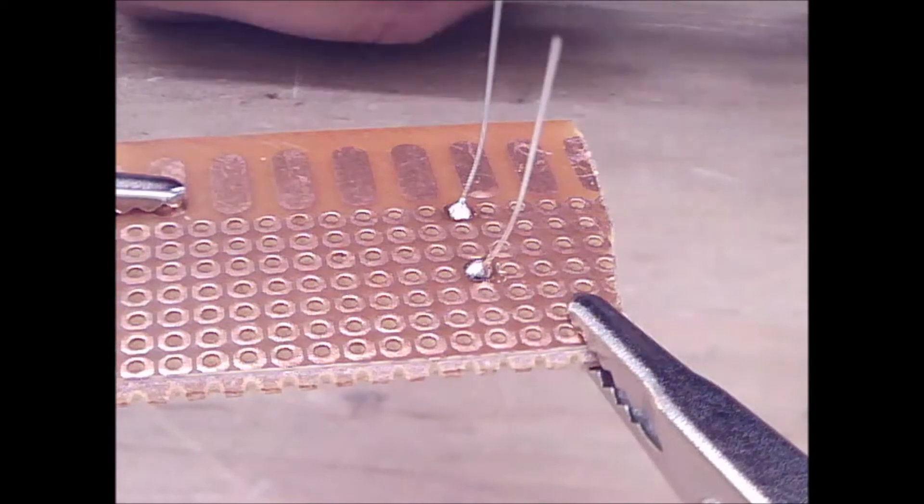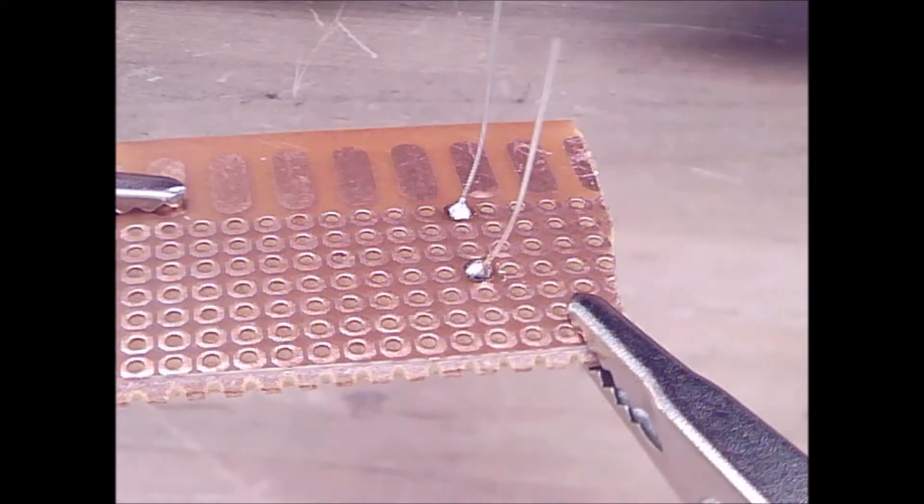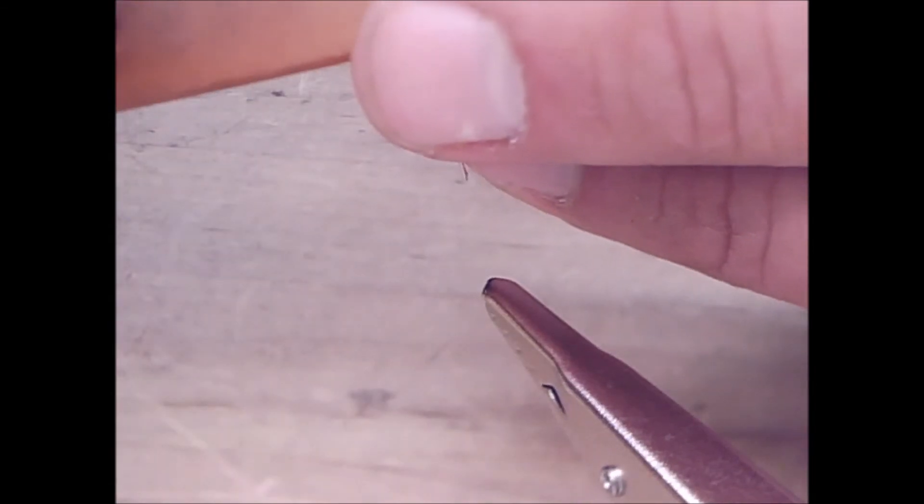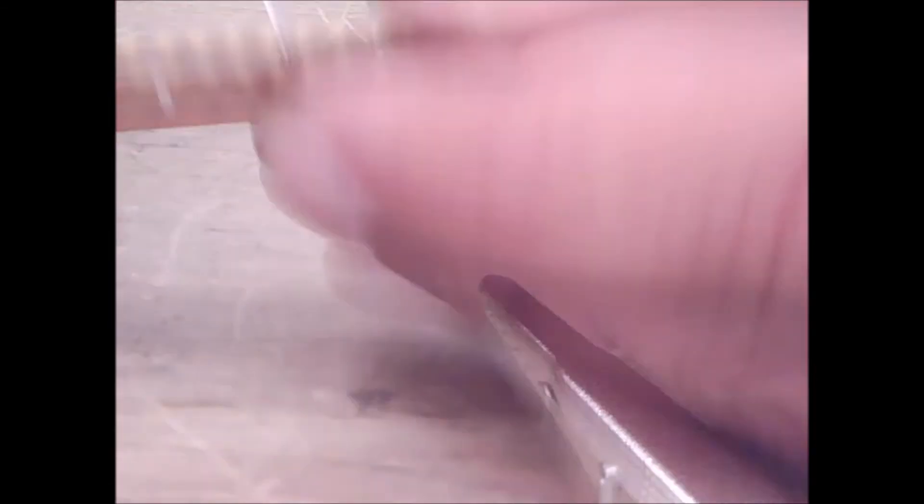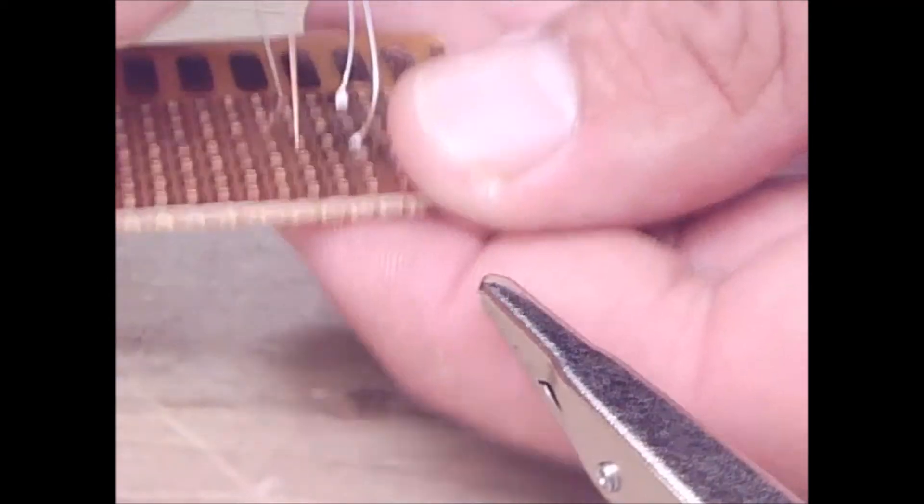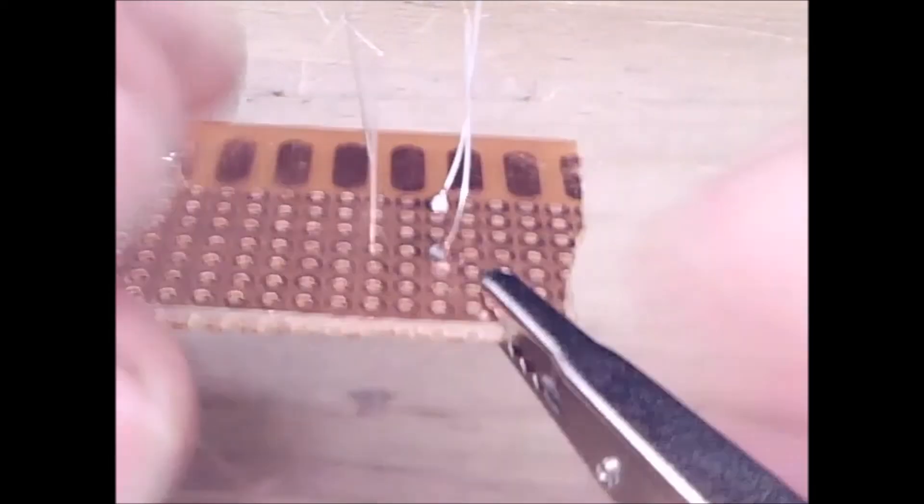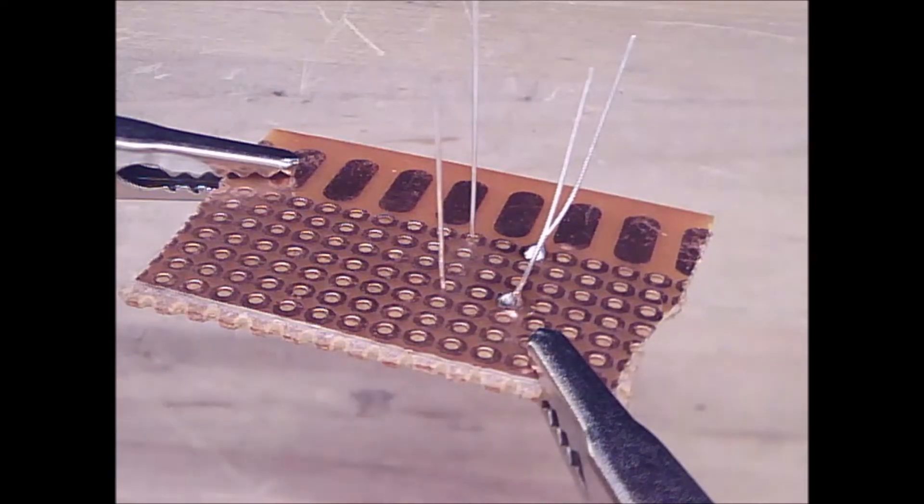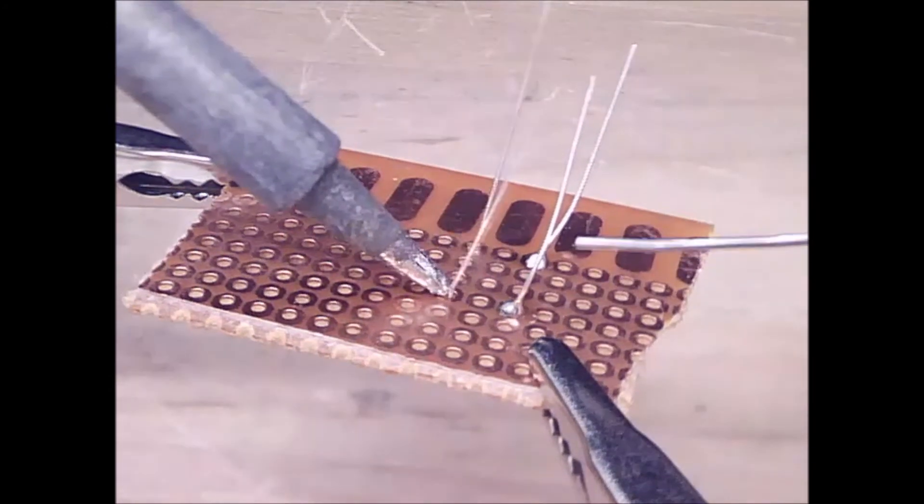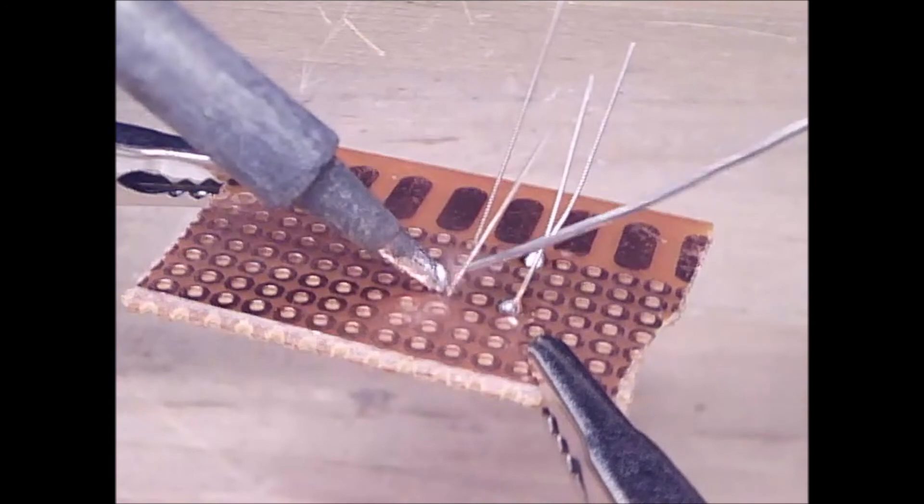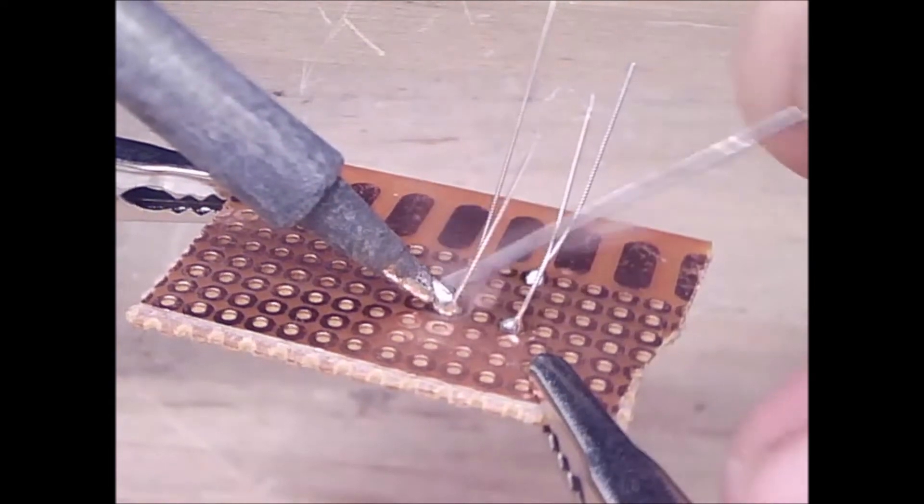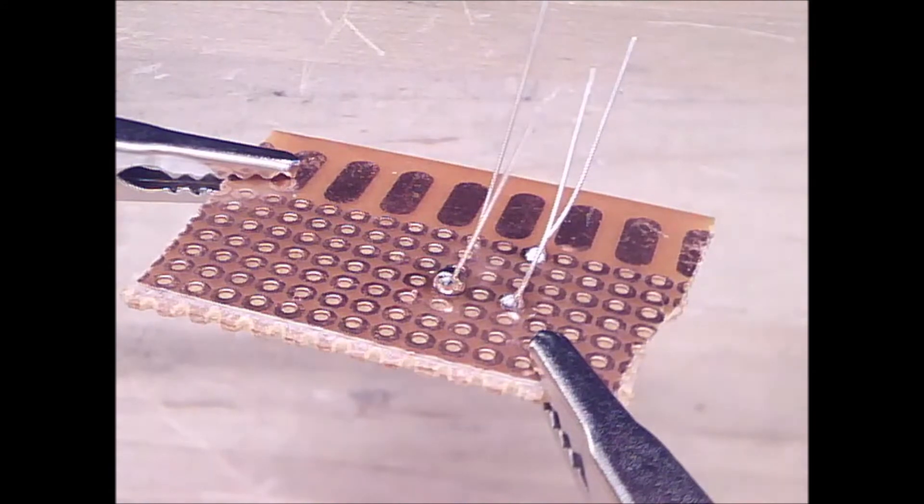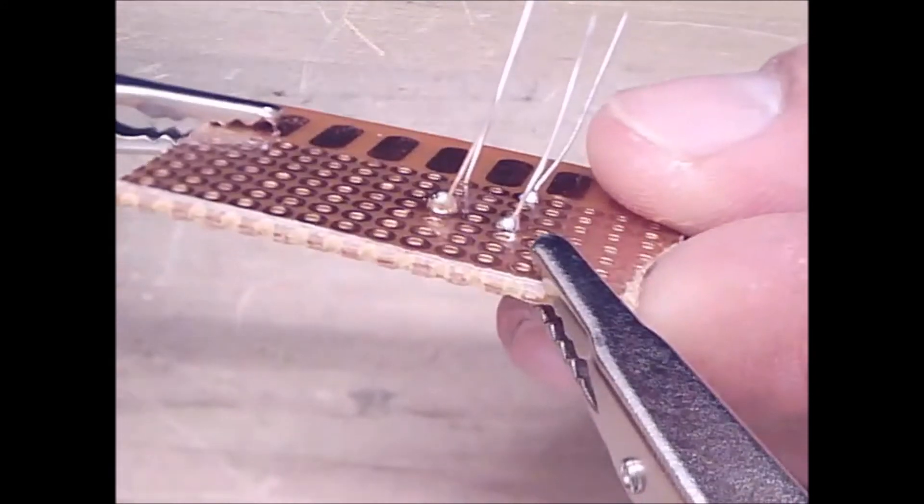So I'm going to load up another resistor real quick. Bring it through on the other side. Okay, bend the leads out just a little bit. And, okay. Now this is what I would call too much solder. See that? That is way too much solder.